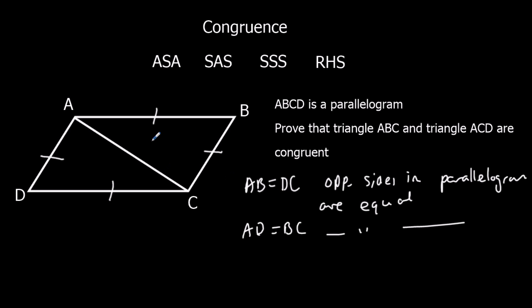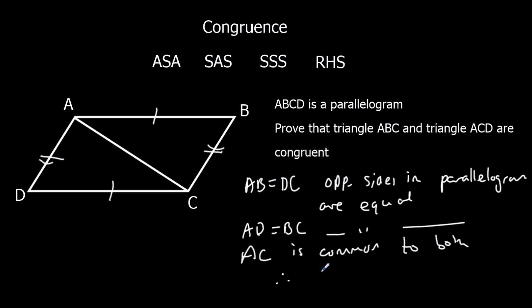AC is common to both triangles. So we've got side, side, side — therefore the two triangles are congruent by SSS. I could have also used the fact that angle ADC equals angle ABC and gone with side-angle-side instead.